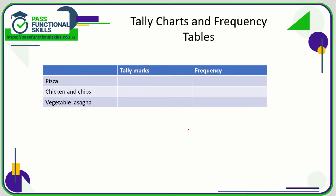Going back to the previous example of asking your students what they want to eat, imagine we had a completed tally chart something along these lines. What we would do now is add a frequency column. In the frequency column we just add up the tally marks: five plus five plus three — five, ten, eleven, twelve, thirteen — so thirteen children chose pizza. Five, six, seven, eight, nine chose chicken and chips. And vegetable lasagna: five, ten, fifteen, sixteen, seventeen.